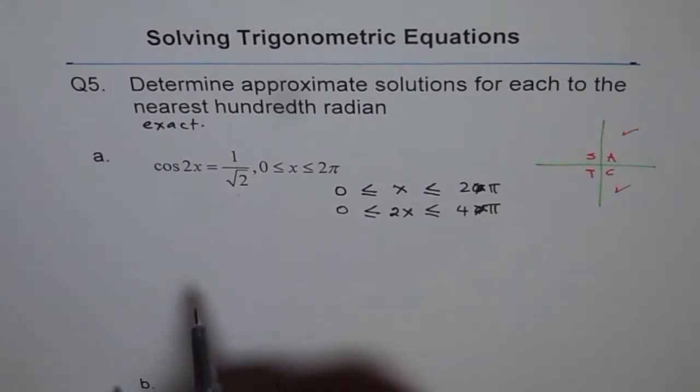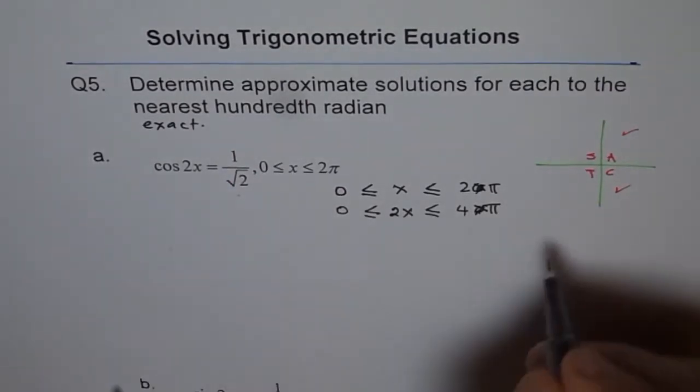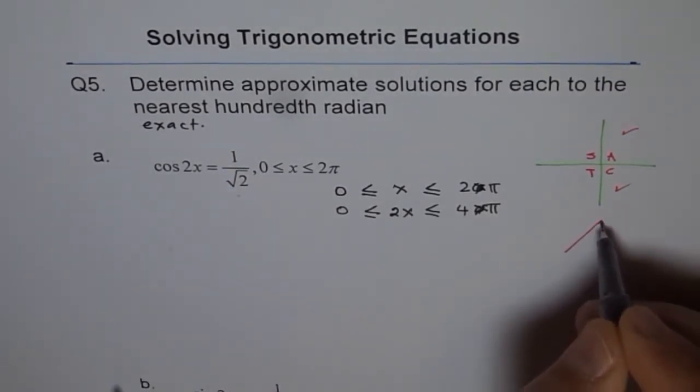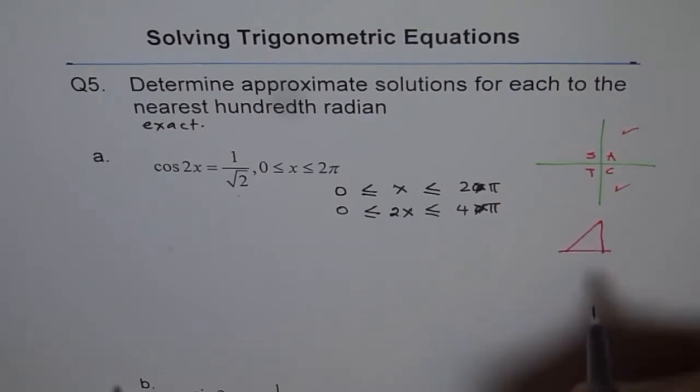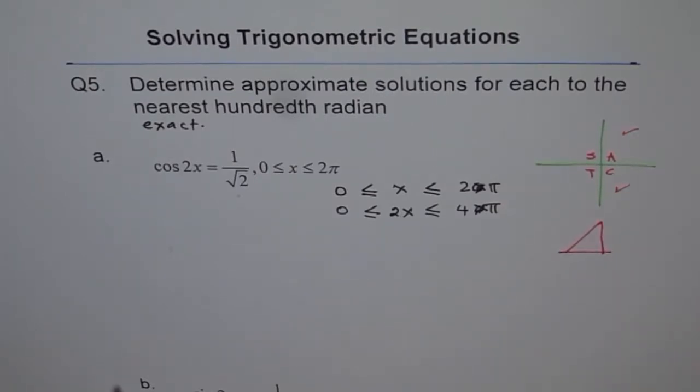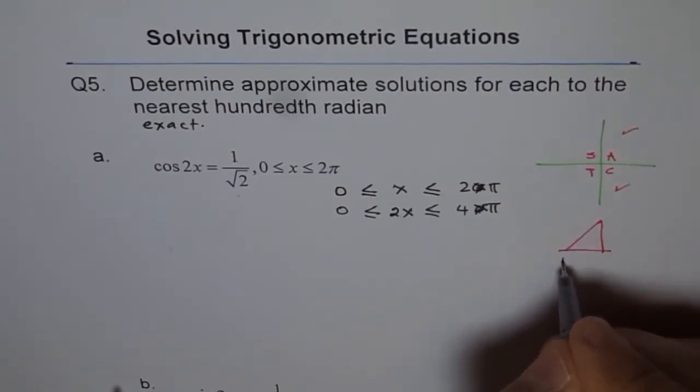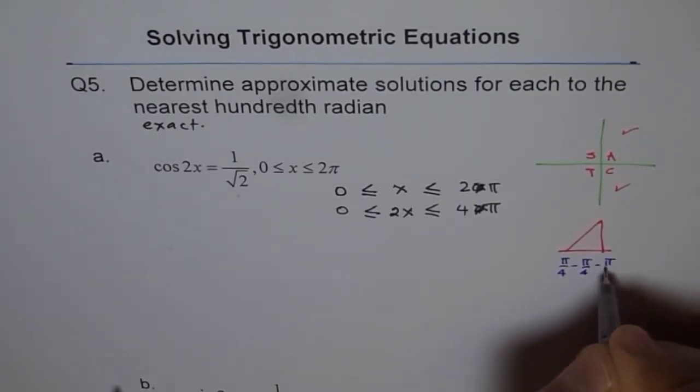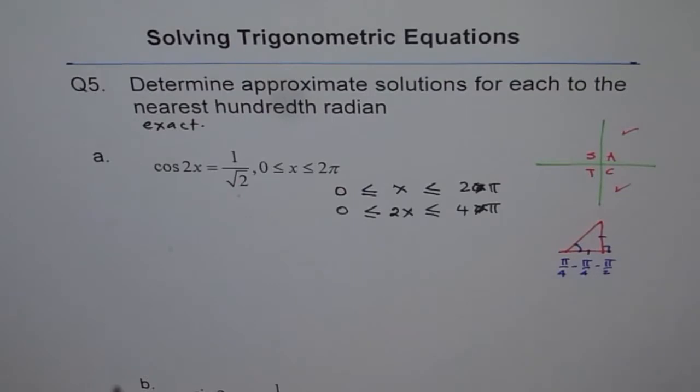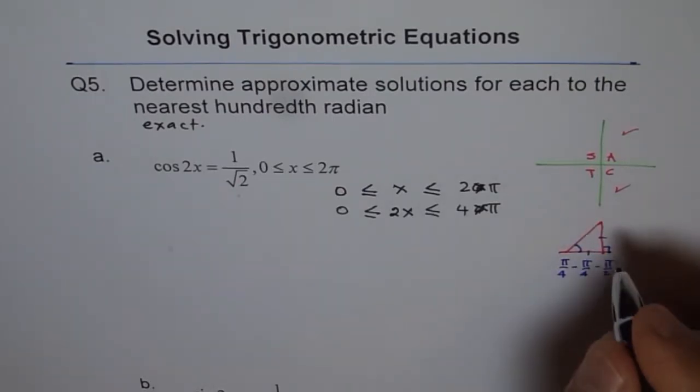And we need something like 1 over square root 2. So 1 over square root 2 reminds you of this triangle, which is π by 4 triangle. Correct? So this is a π by 4, π by 4, and π by 2 triangle. That angle is π by 4 for us. This is 90 degrees.